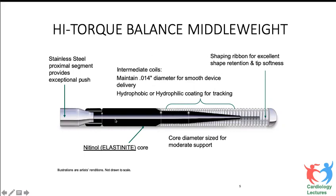For example, in a BMW wire, the proximal core is stainless steel, the middle is nitinol (which retains shape and has memory), and distally there is a three-stage tapering. On top is a hydrophilic coating allowing it to slip through. Hydrophilic means when it contacts water it becomes like wax. The final five to six millimeters is hydrophobic — remaining slippery but less likely to perforate distal vessels. Hydrophilic tips carry greater perforation risk.